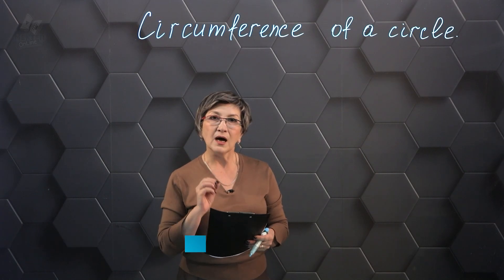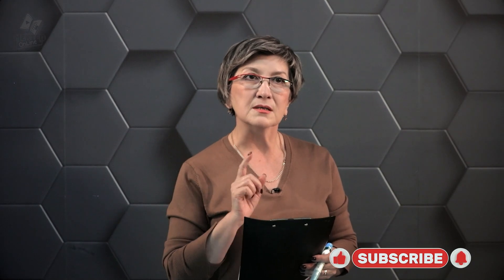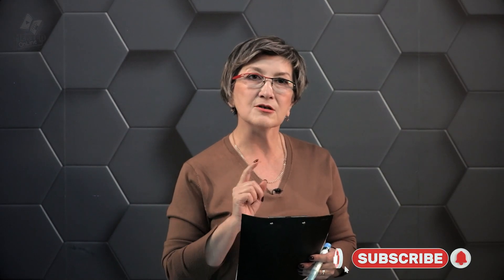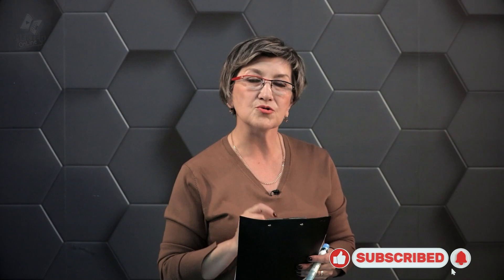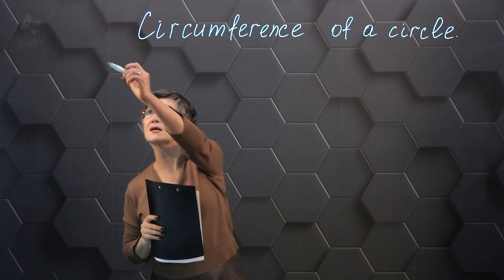The conditions of the problem are as follows. The car has traveled a distance of 4 kilometers and 82 meters. For this distance the wheel has made a thousand revolutions. We need to find the radius of the wheel. Let's write down briefly the condition of the problem.